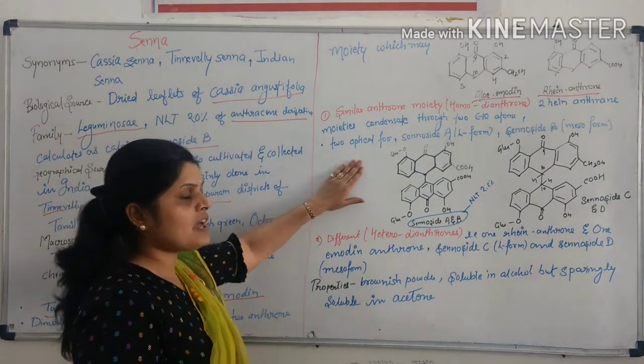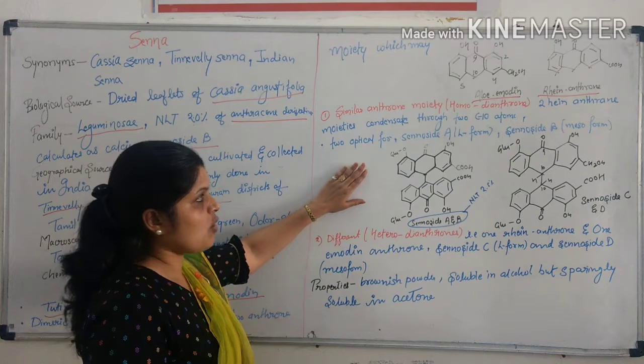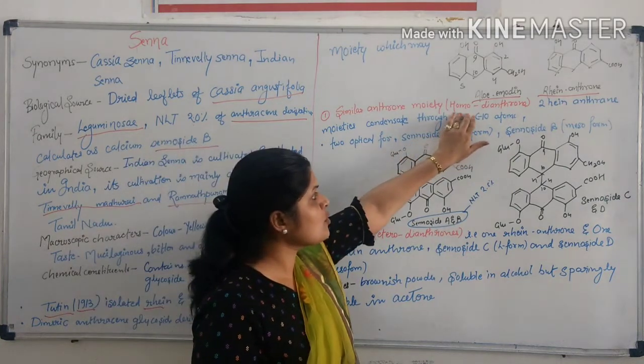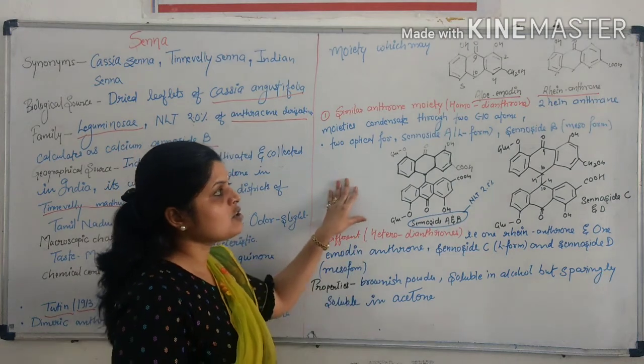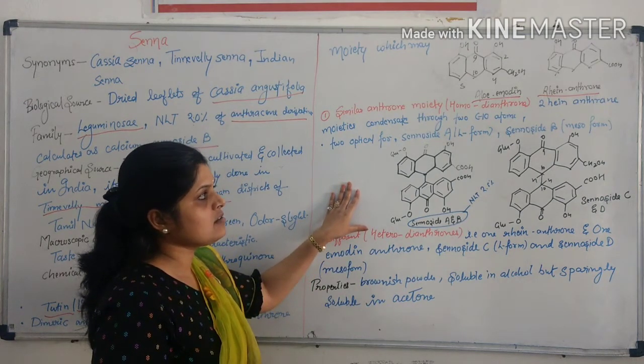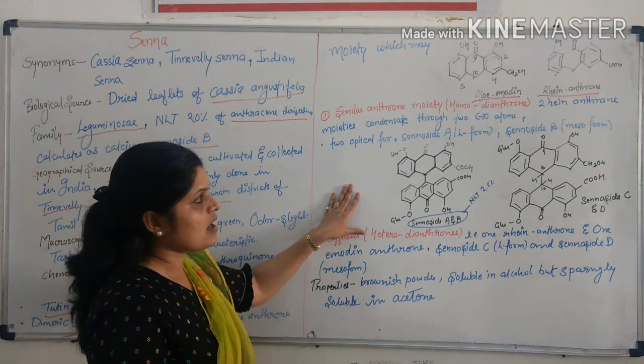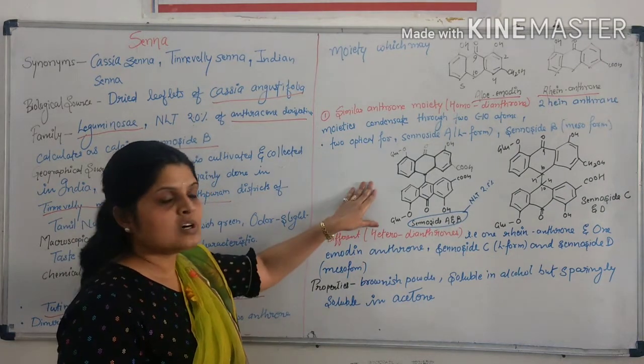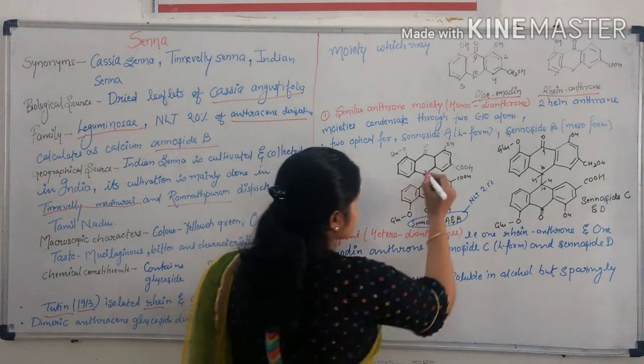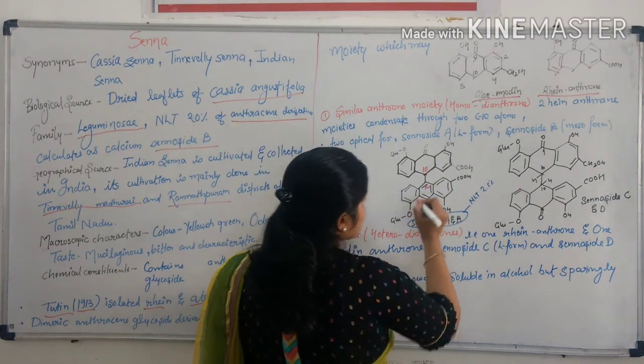Similar anthroquinone, it is also known as homodianthrone. It contains two rheum anthroquinone containing two C-10 atoms.